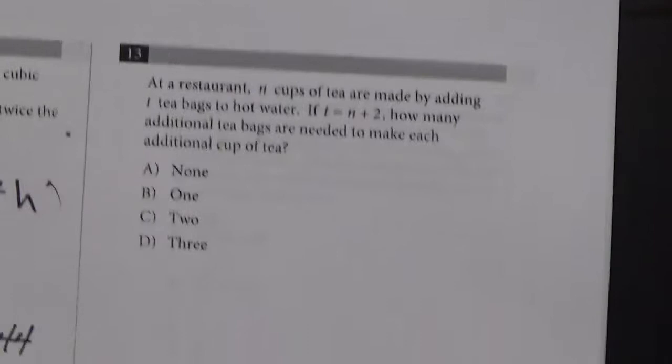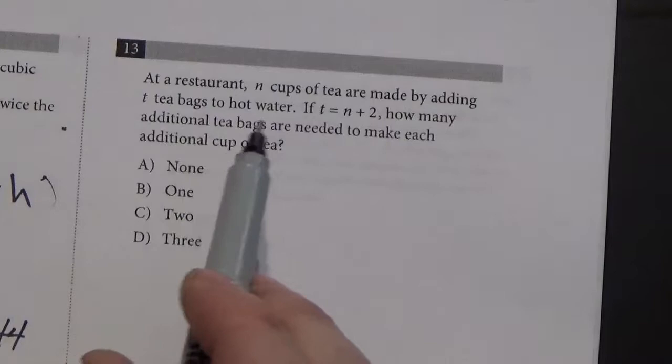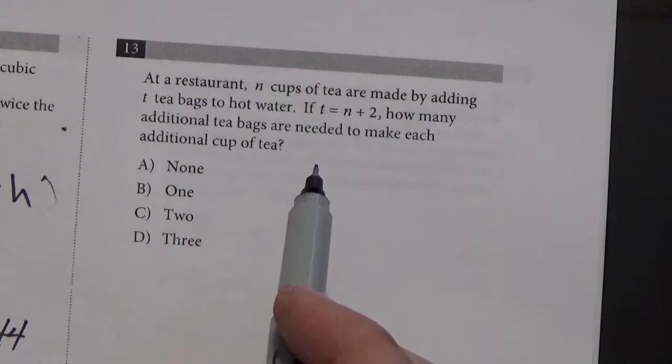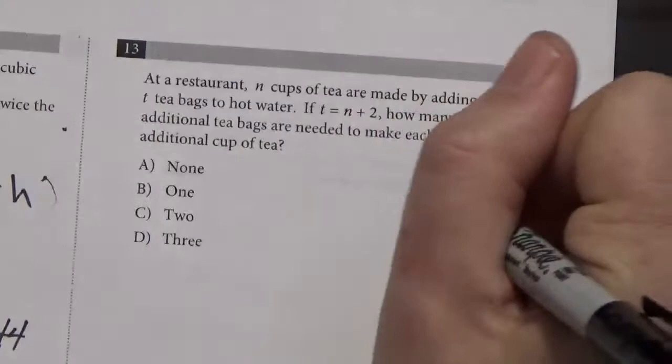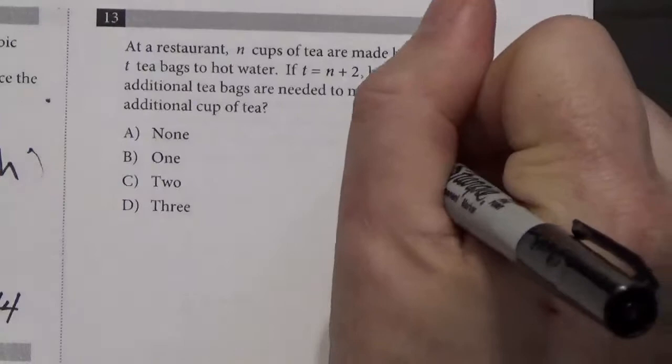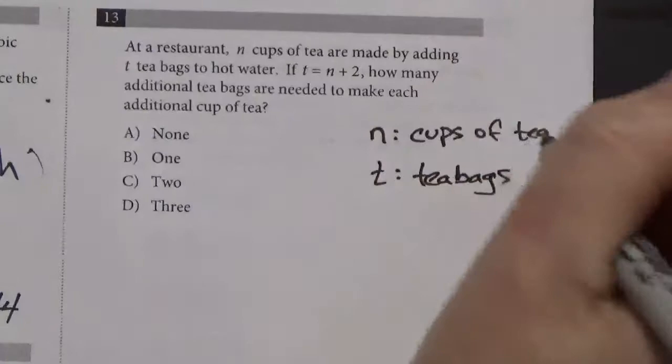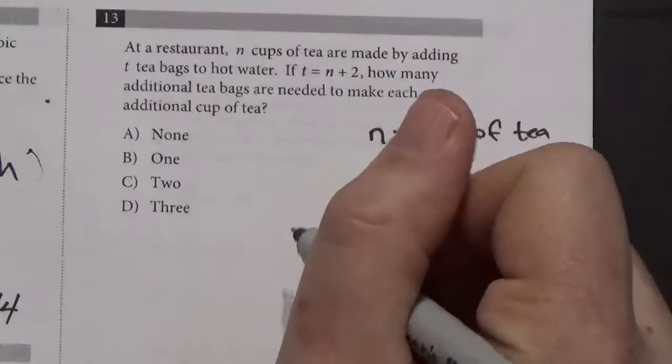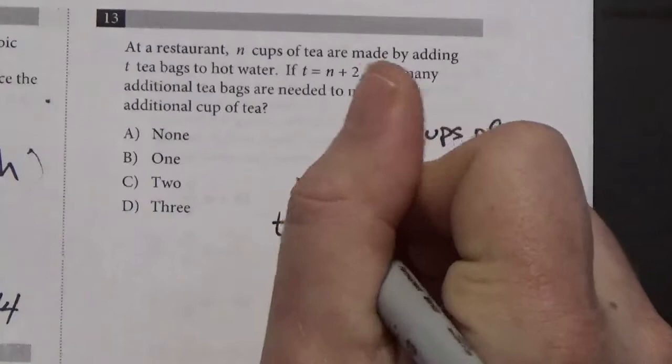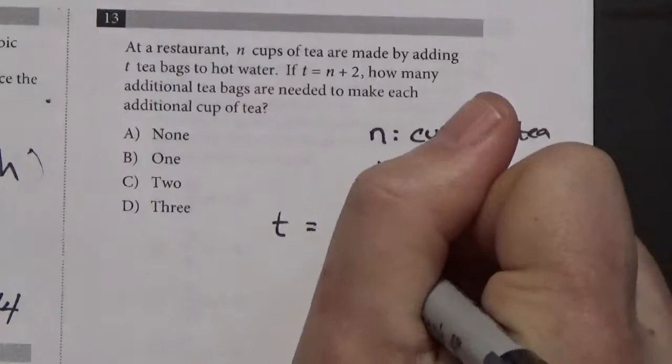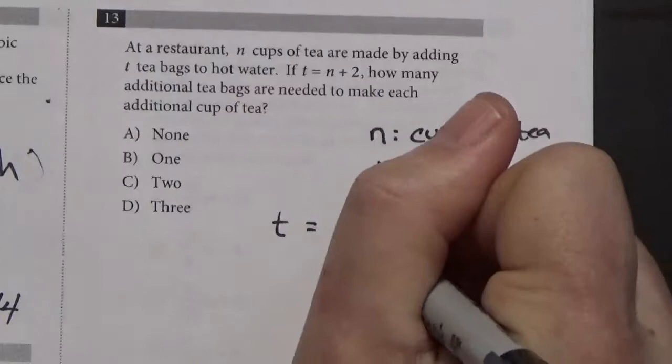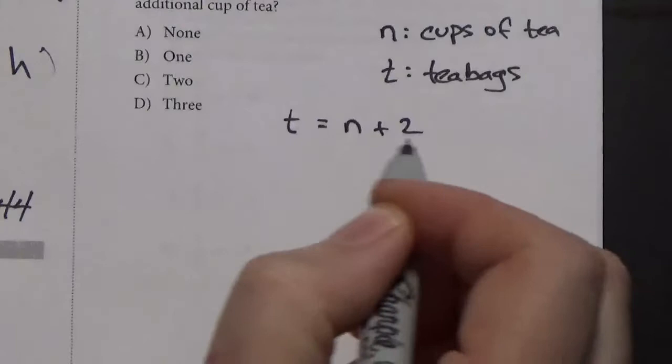And number 11. In a restaurant, n cups of tea are made by adding tea bags to hot water. If t equals n plus 2, how many additional tea bags are needed to make each additional cup of tea? Alright, so sometimes when they're using weird letters in our linear functions, I like to write off to the side what these letters stand for. So, n is cups of tea, and t is tea bags. Now, if you remember what we talked about with number 8, this is also just a linear function question. So, t is the output, it's the tea bags, and it's a function of the number of cups of tea that I want to make, so n plus 2.